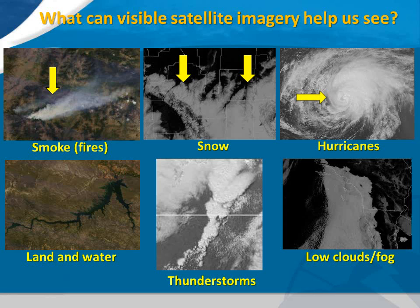The bottom row of images shows how land and water, thunderstorms and fog, and low clouds appear in visible satellite imagery. In the land and water image, Fort Peck Lake appears darker than the surrounding land because the water is fairly deep and always moving, so it tends to absorb a lot of sunlight rather than reflect it.